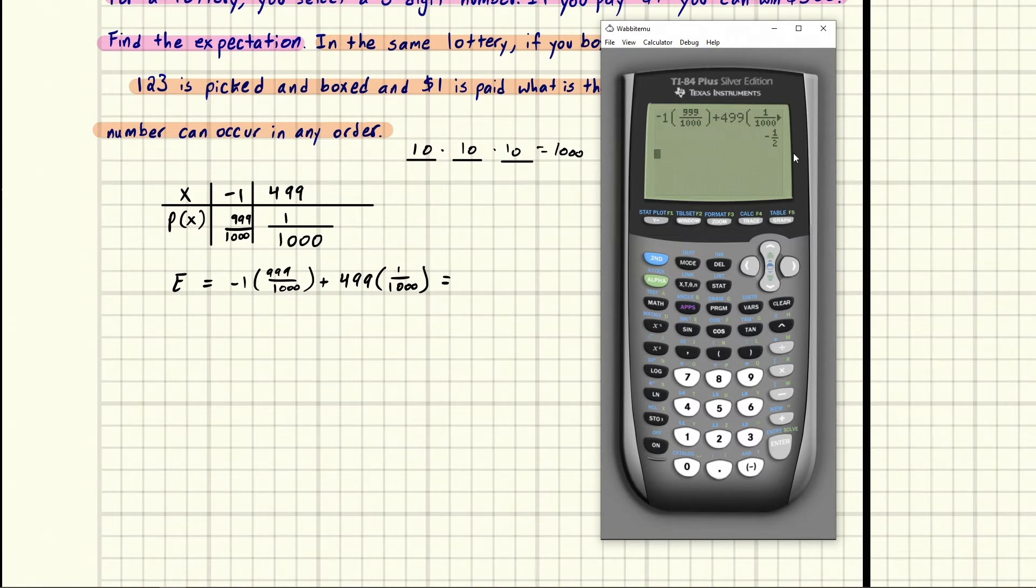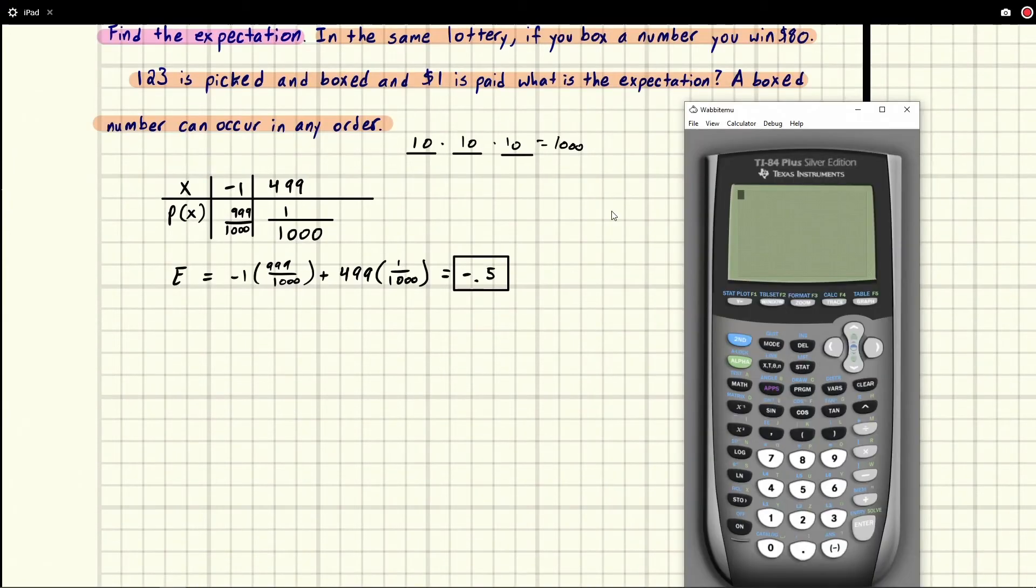And we're going to get our answer, which is negative a half. So negative 0.5. So this is the expected value - you expect to lose money. So expect to lose 50 cents.